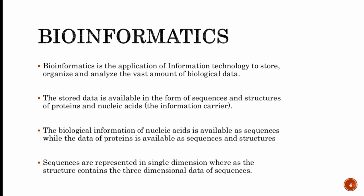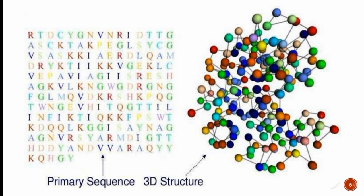These sequences and structures are basically made of proteins and nucleic acids, which are called information carriers. The biological information of nucleic acids is available as sequences, while protein data is available as both sequences and structures. Sequences are represented in single dimension, whereas structures contain three-dimensional data, as you can see in the picture.